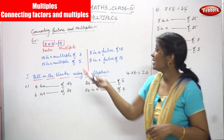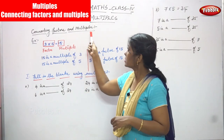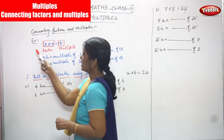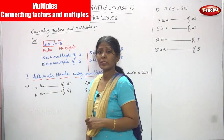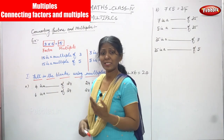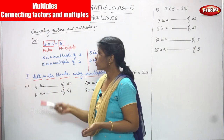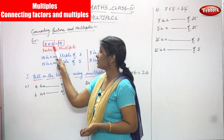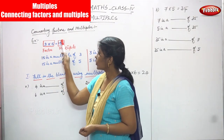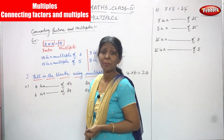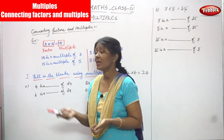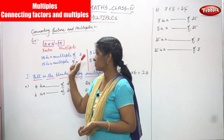Now we are going to see connecting factors and multiples. Look at an example: 3 into 5 is equal to 15. These two numbers are multiplied. The first number and second number — when two numbers are multiplied, this is called a factor, and the result you get is called a multiple.